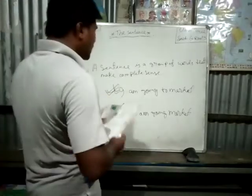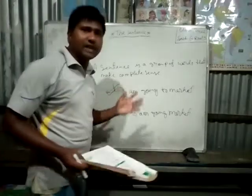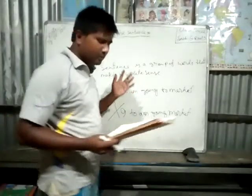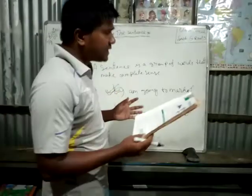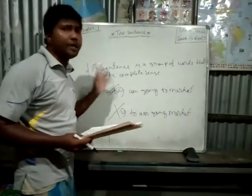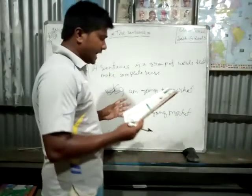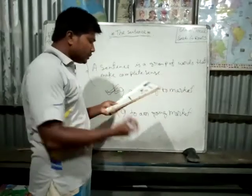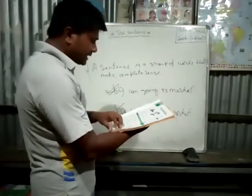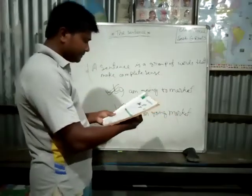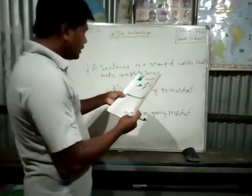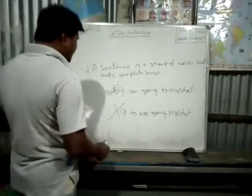So boys and my dear students, I hope you understood about that. This sentence — next, some rules are there. Three rules are here.